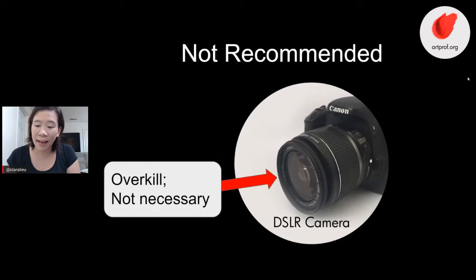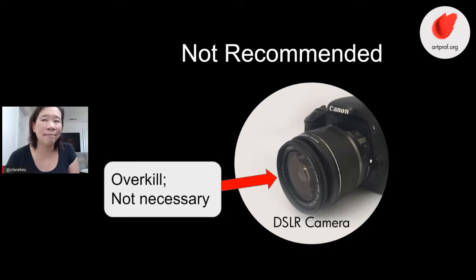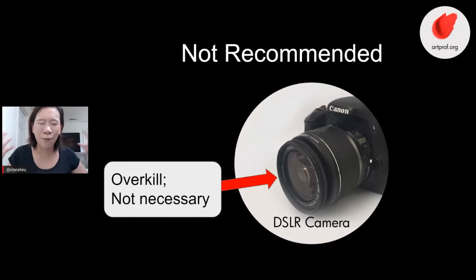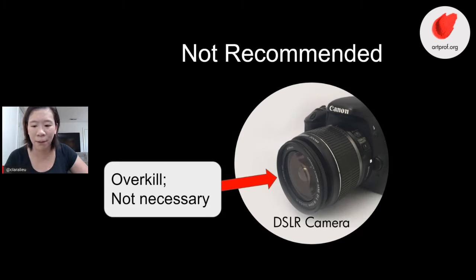I don't recommend a DSLR camera. I use a DSLR camera for tons of our videos at ArtProf, but not for live ones — it's overkill. A DSLR camera is so over the top unnecessary for this purpose. My webcam moves around a lot because I have to position it in different ways. The DSLR is not easy to position unless you have a really expensive tripod, which a lot of people don't have.